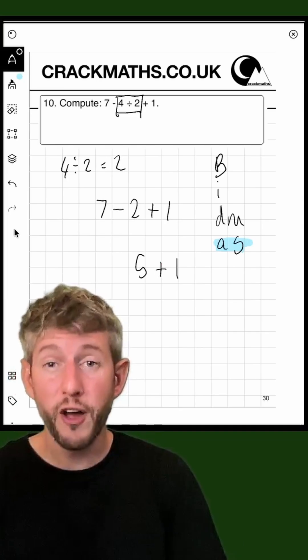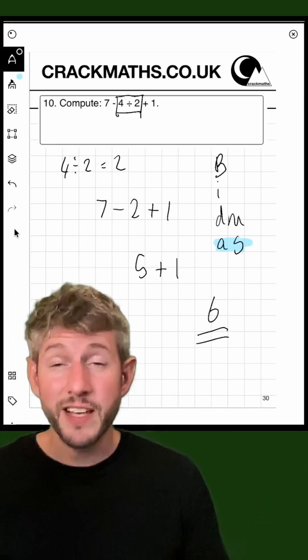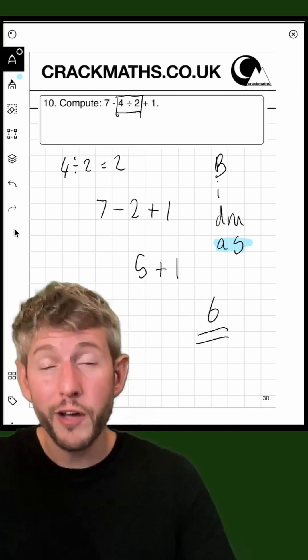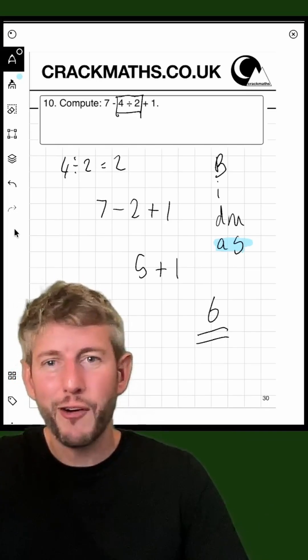Now we do five plus one. Five plus one is six. So the answer to this question is six. If you need any more work on order of operations, make sure you visit tutorial 30 at crackmaths.co.uk.